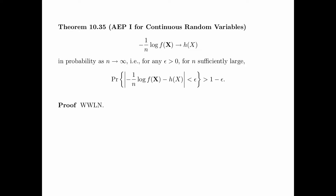Again, the AEP for continuous random variables is a consequence of the weak law of large numbers.